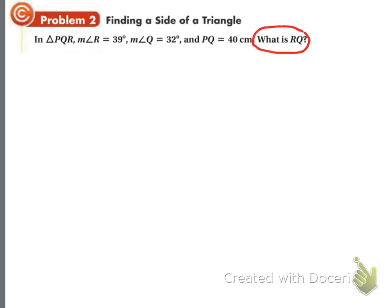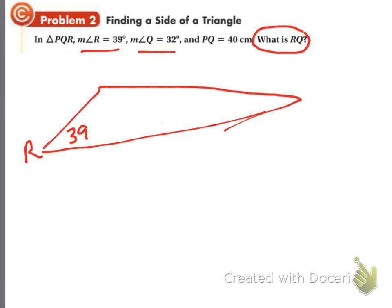In triangle PQR, the measure of angle R is 39 degrees, the measure of angle Q is 32 degrees, and PQ is 40 centimeters. They want to know what is RQ. So the first thing we're going to do is draw a triangle. These two are both acute angles, so I've got something like this. Here's R, that's 39. Here's Q, that's 32. Well, there's one more letter left, P. And PQ is 40. What is RQ? We don't know.